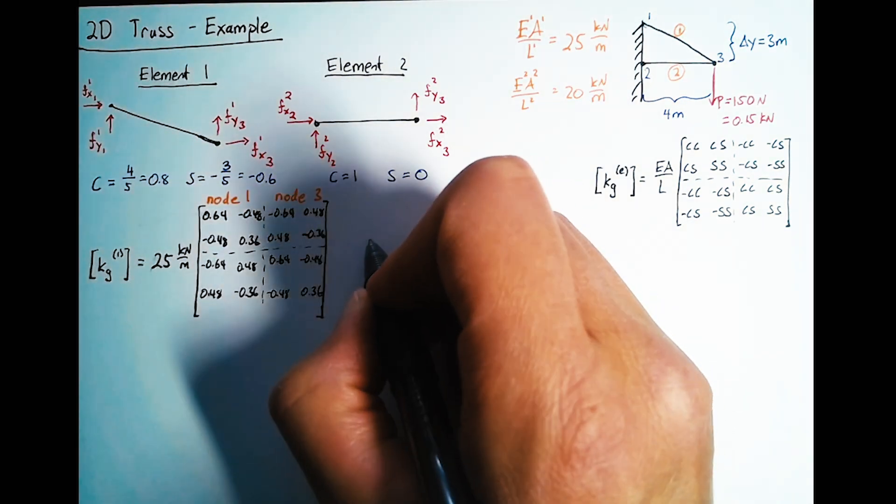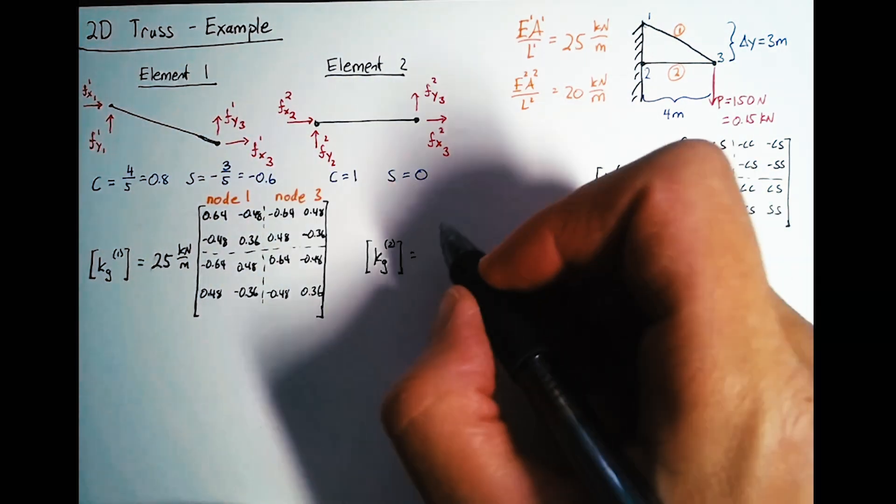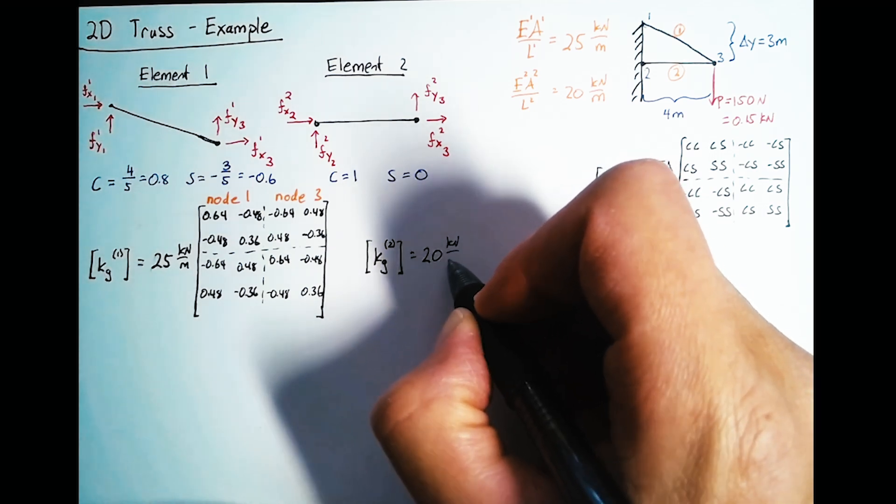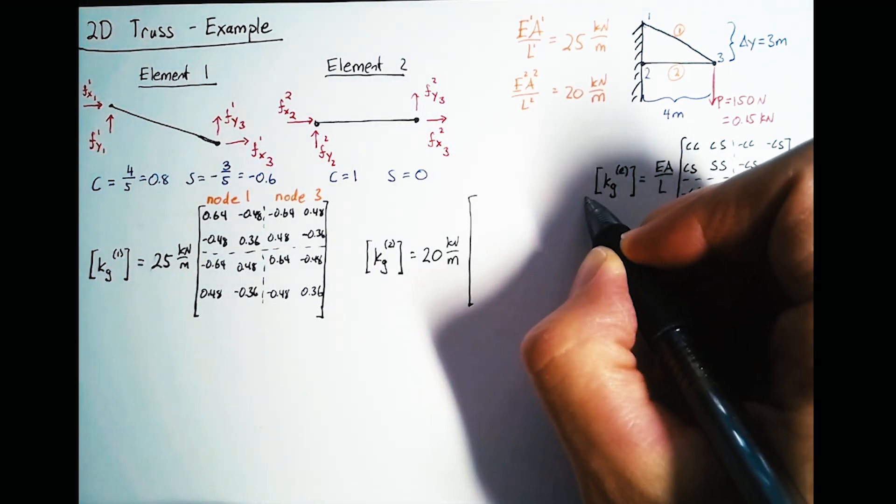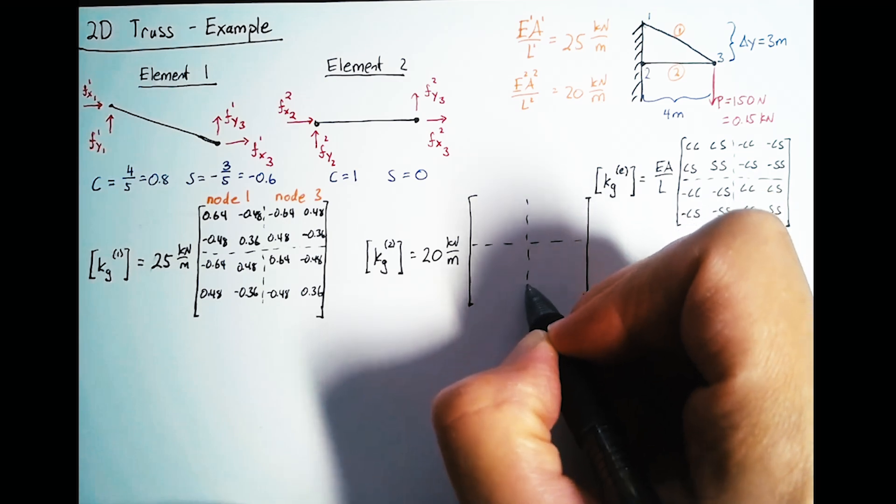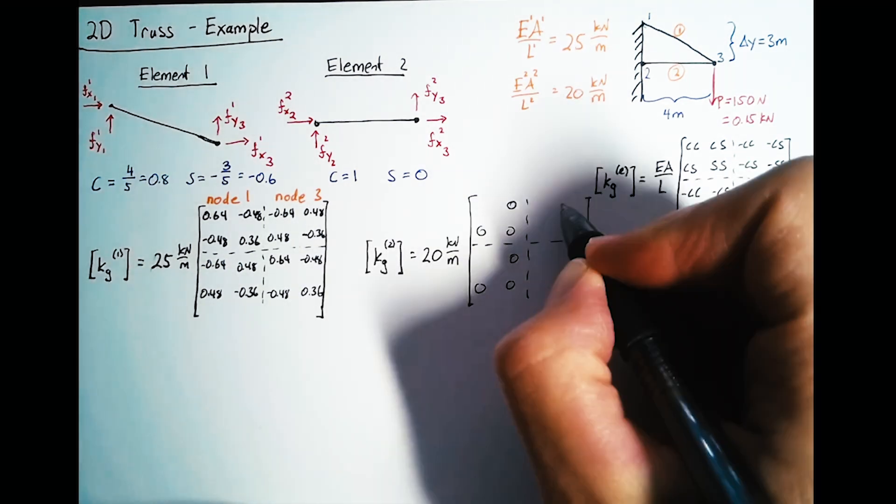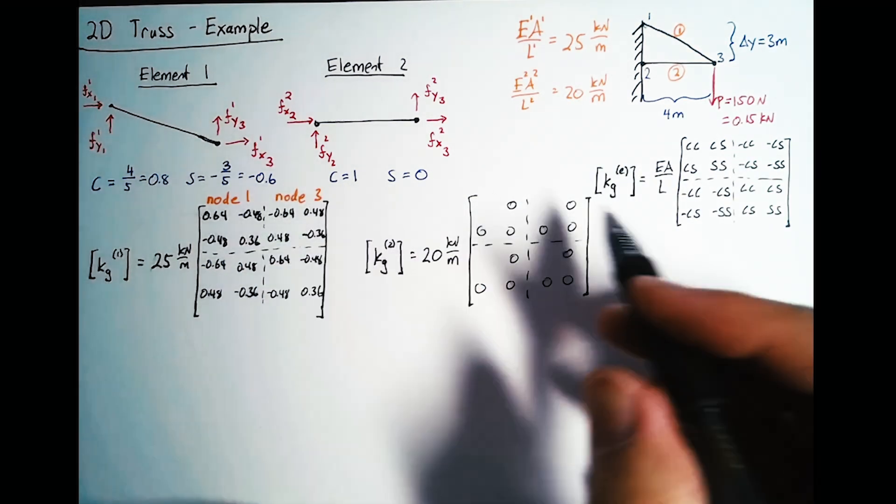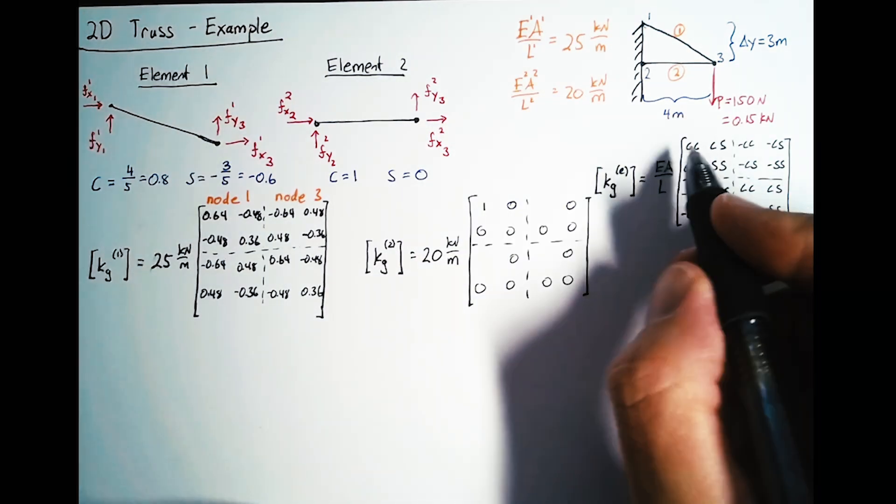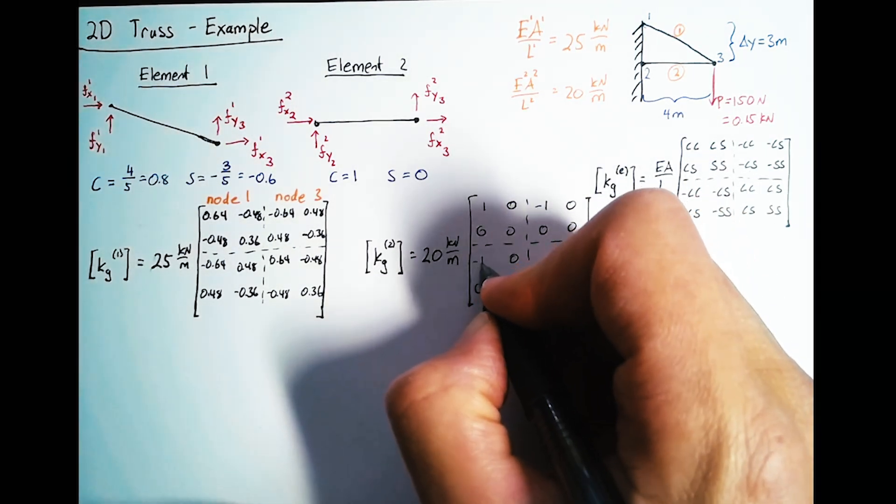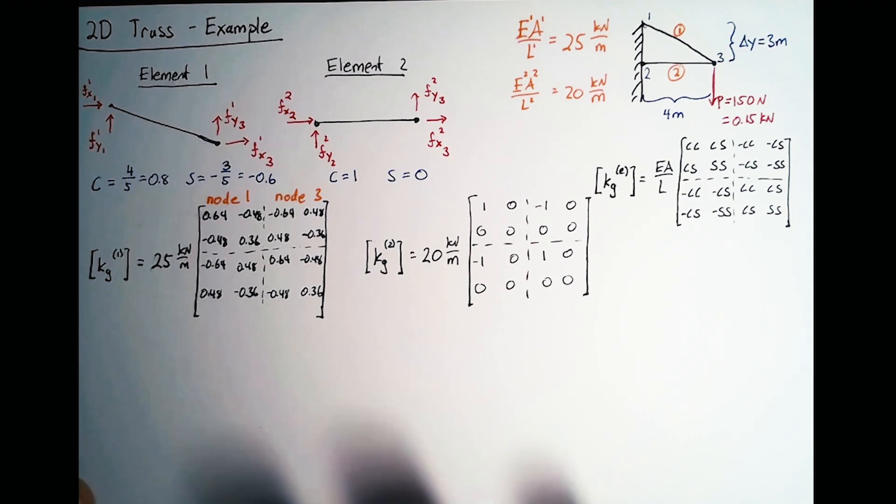We'll do the same thing for element 2. The 20 kilonewtons per meter comes out front. This becomes very easy because everywhere we have a sine, we can just put a 0. And 1 times 1 is just 1, so all these cosine times cosines are just 1. Now with both of those in hand, we can finally go to assembly.